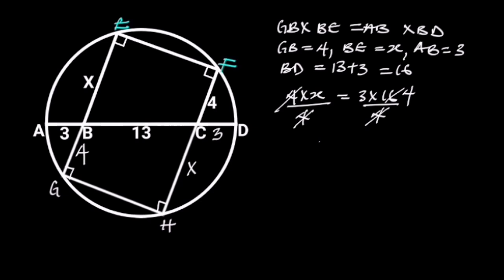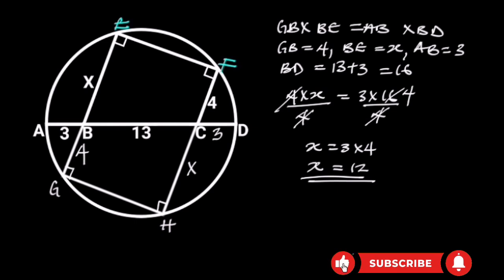And we are left with X is equal to 3 times 4, which is equal to 12. Hence, X is equal to 12 units.